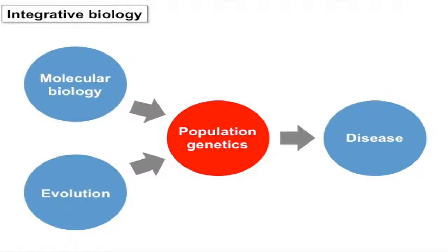I'm most interested in population genetics — that sort of variation. But that variation comes from somewhere, so to understand population genetics you also have to be aware of the underlying molecular biology. And relevant to this entire retreat, you have to be aware of evolution: how do population-level processes affect the variation you see in nature?